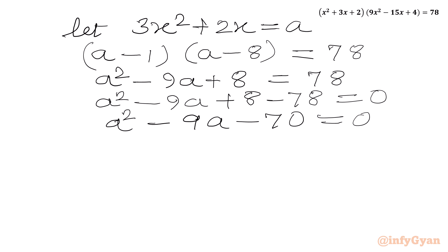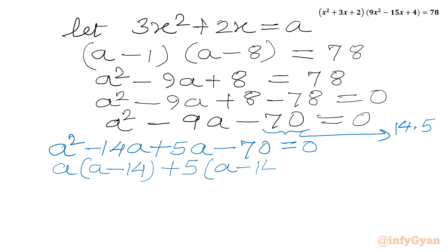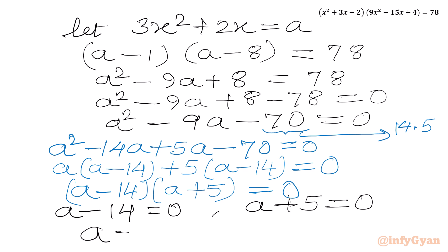The equation is now quadratic. We can use the factorization method. Factoring 70 as 14 × 5, and since 14 - 5 = 9, we split -9a as -14a + 5a. So: a² - 14a + 5a - 70 = 0. Taking a common from the first two terms: a(a - 14), and 5 common from the last two: 5(a - 14). This gives (a - 14)(a + 5) = 0. So either a - 14 = 0, giving a = 14, or a + 5 = 0.